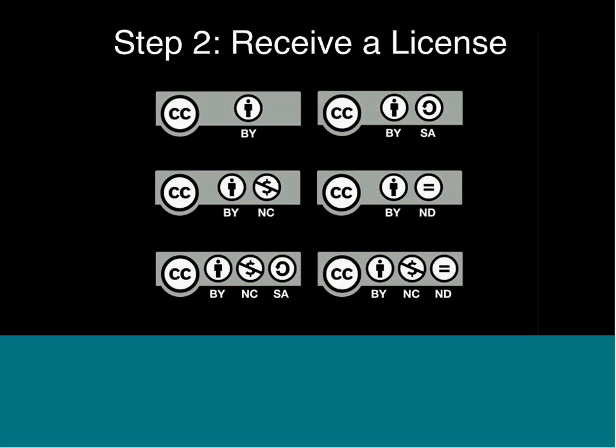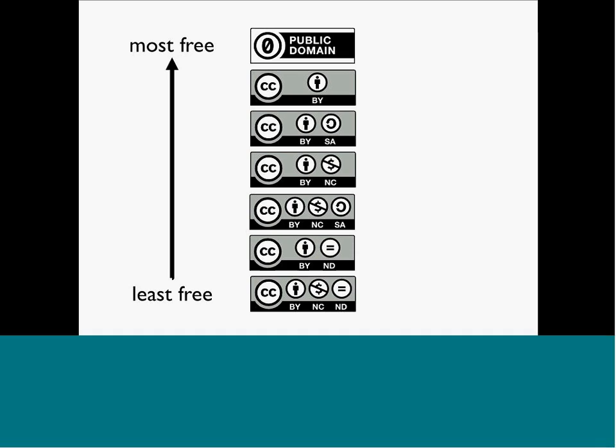BY, by the way, means attribution — like 'this book is BY Cable Green.' These licenses exist on a continuum from most free to least free. As you think about which Creative Commons license to use at your schools or universities, just remember that the main point of using a CC license is to share. If your goal is to share knowledge as broadly as possible, try to get toward the top of the list. Generally, what's most commonly sought after are objects in the public domain, CC BY, and CC BY-SA.